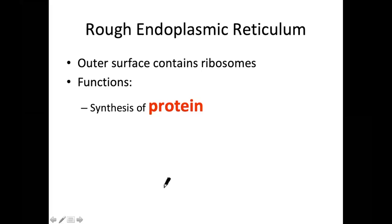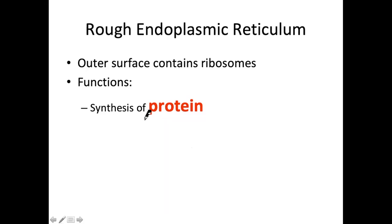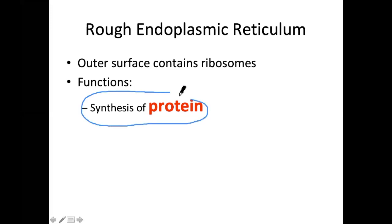Please memorize this by heart: the main function of the rough ER is protein synthesis. It contains ribosomes, which give it the rough appearance. The rough ER is for synthesis of protein.